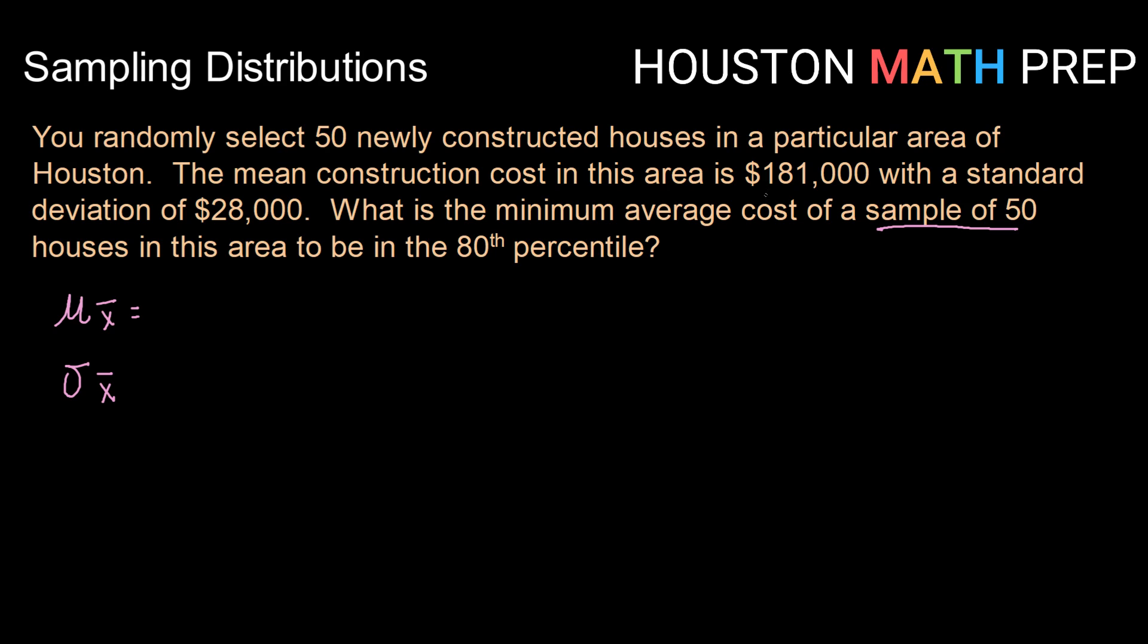So mu of X bar will be the same as the mu for the population, which will be $181,000. Sigma of X bar is calculated by doing sigma divided by the square root of n. So that will be $28,000 divided by the square root of my sample has 50 in it. So although we're going to use that unrounded value there to do our calculations, we might be interested to know that that's about $39,059.79.